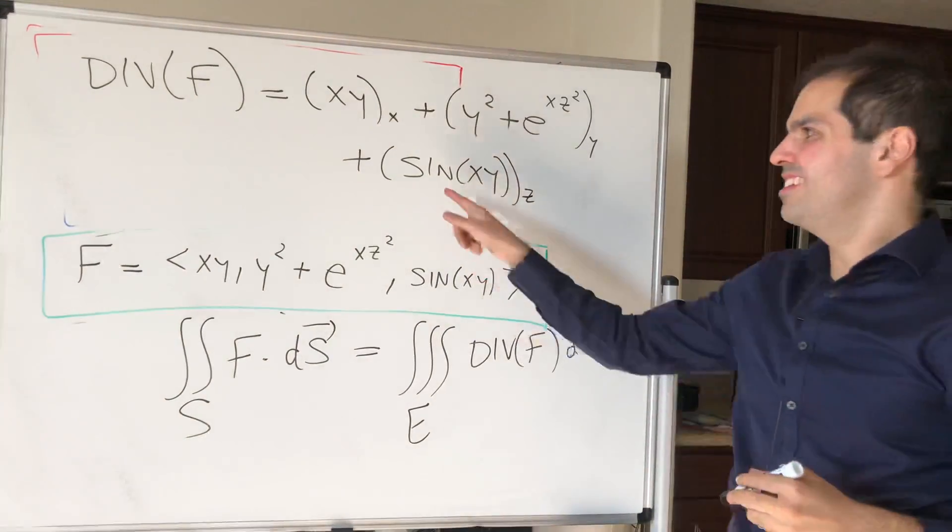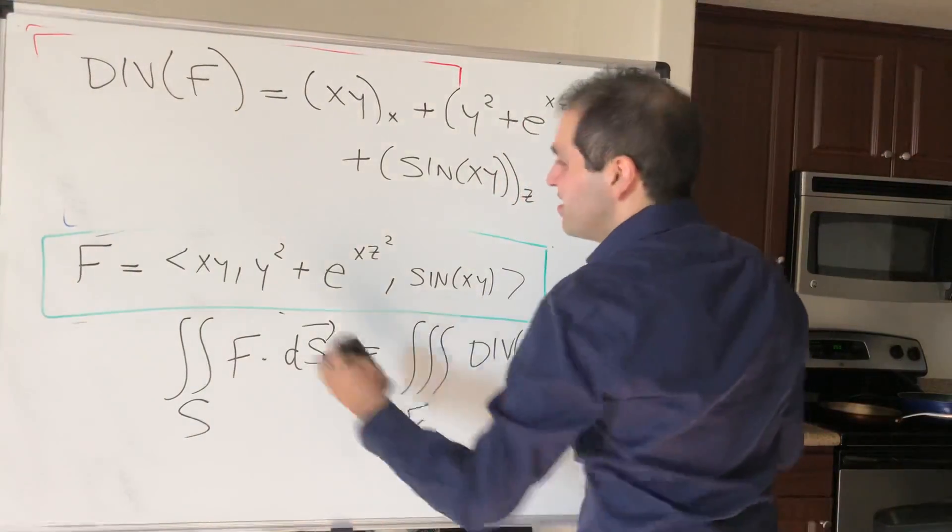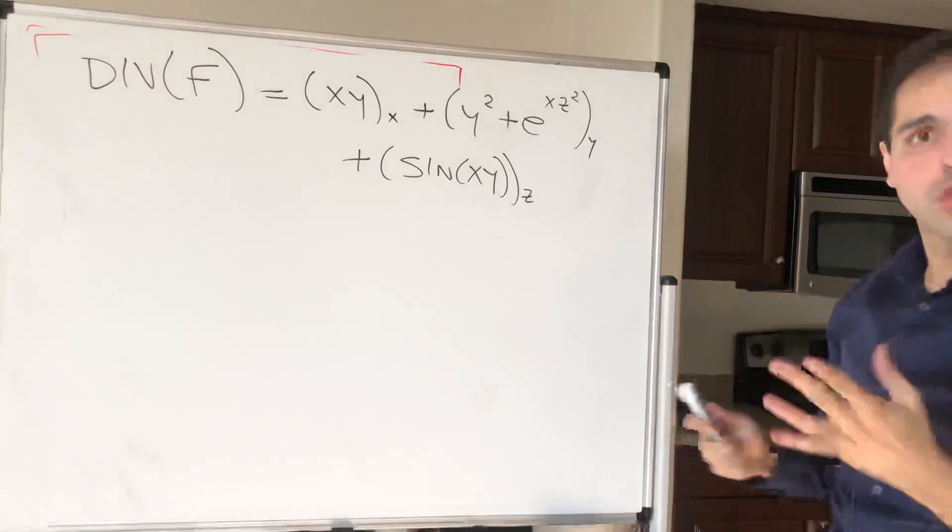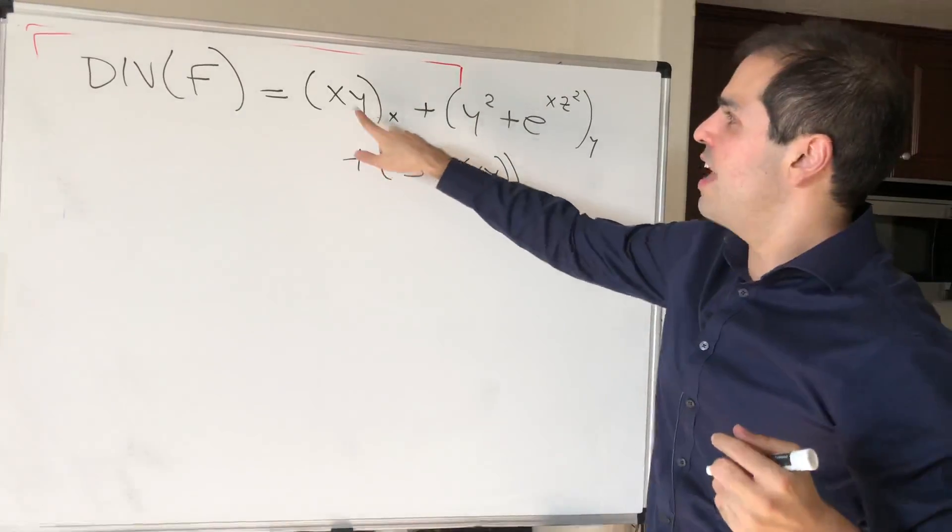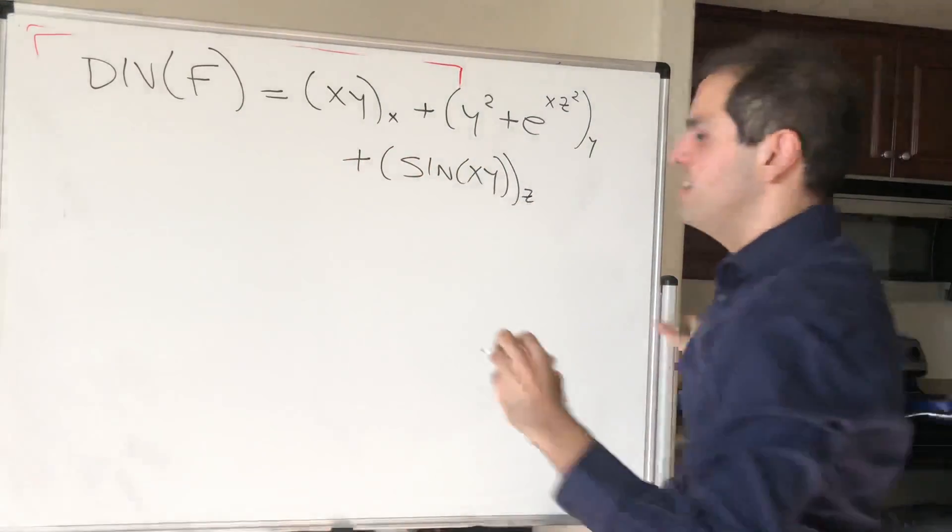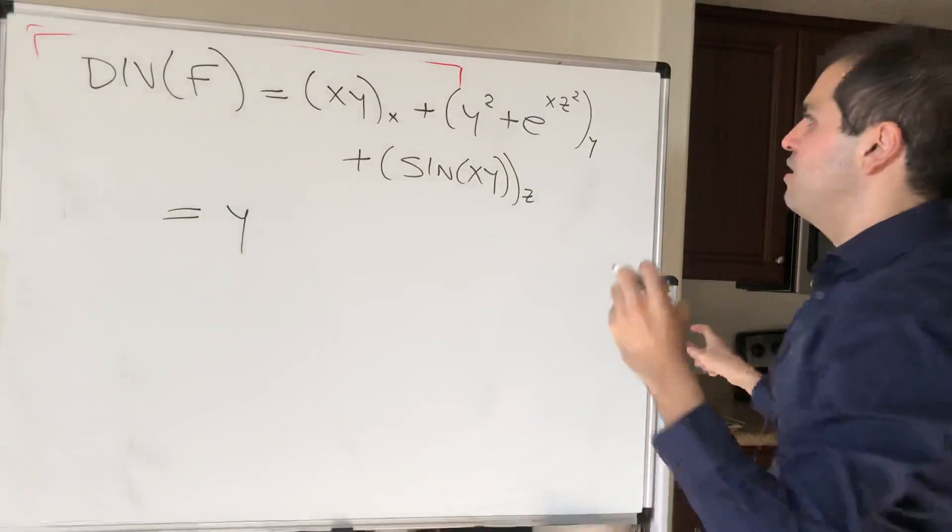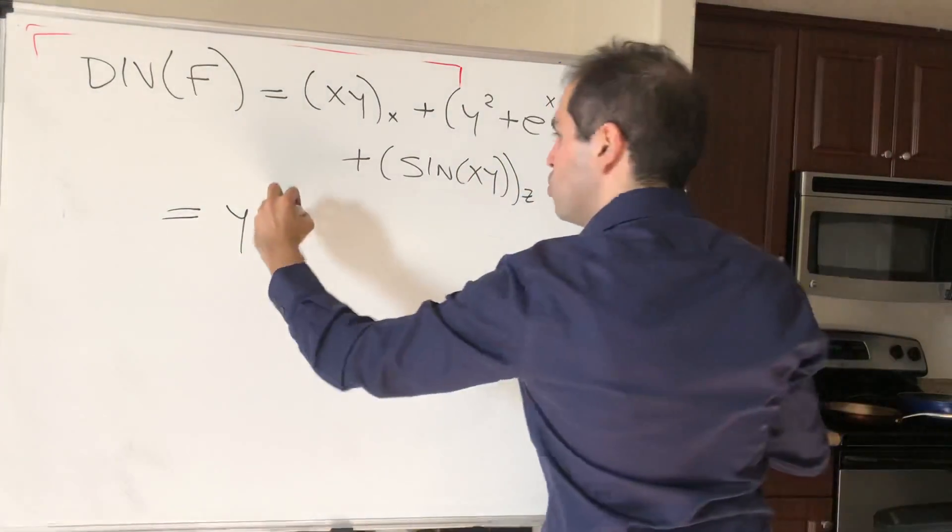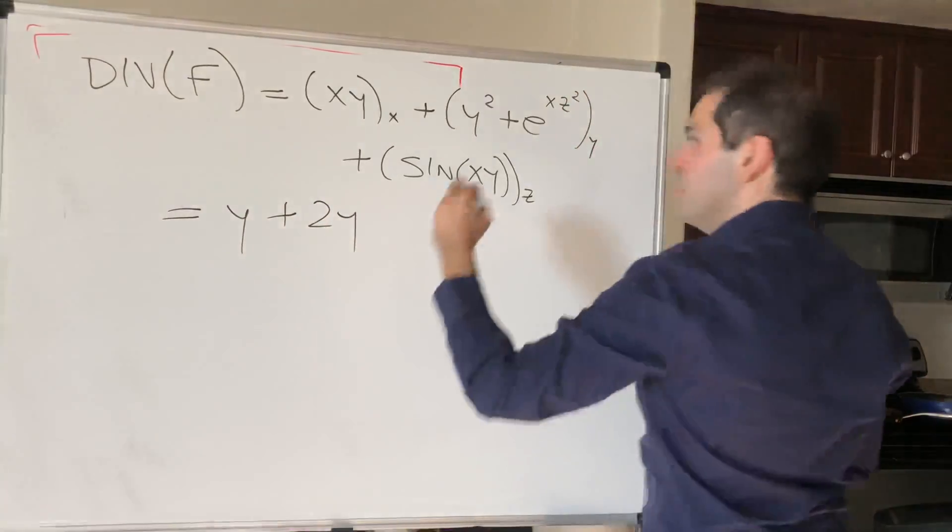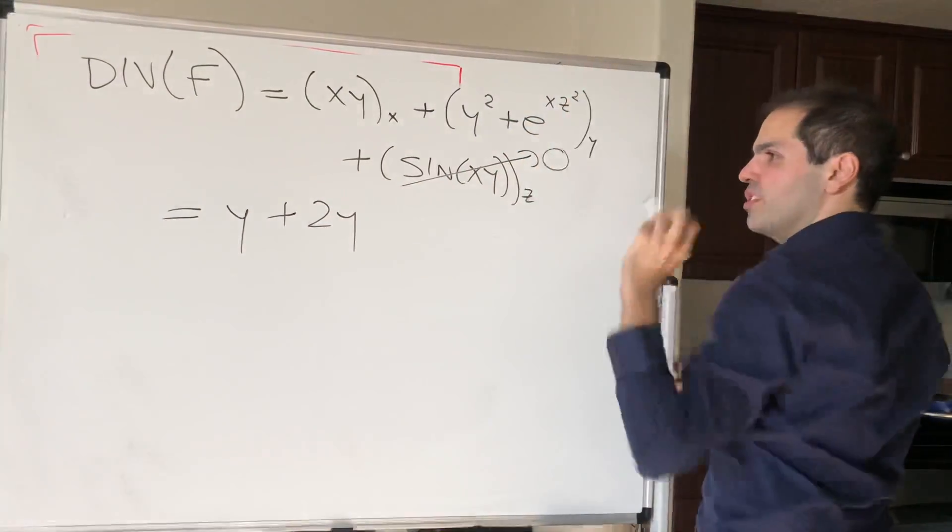Yes, it's the sine of our times. So then this monstrosity simplifies. So the x derivative of xy is just y, the y derivative of y squared plus this is just 2y.